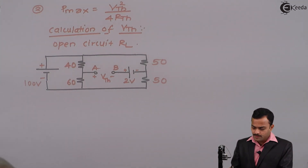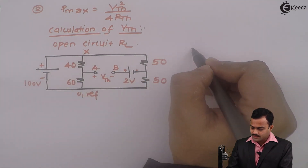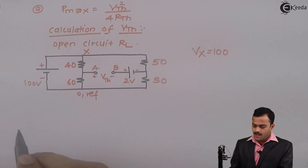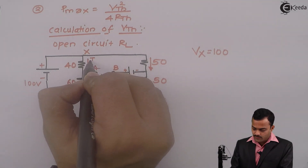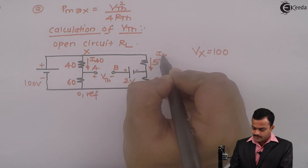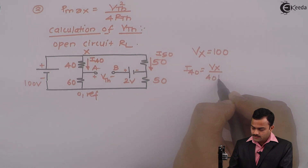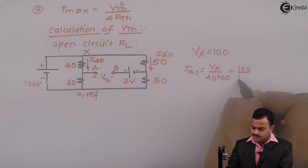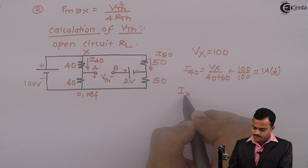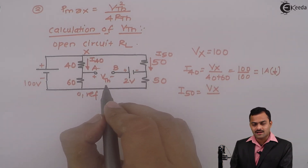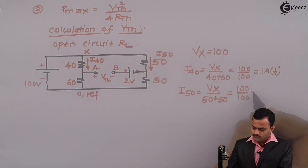It is a very simple problem. I consider this as node X, with the reference node such that the only potential is 100 volts. So I can directly say VX equals 100. This 100 volt gives rise to 2 currents: one through the 40-60 branch, which I call I40, and another through the 50-50 branch, which I call I50. I40 is VX divided by total resistance 40 plus 60, which is 100 divided by 100, giving 1 ampere downward. Similarly, I50 is 100 divided by 50 plus 50, which is also 1 ampere downward.